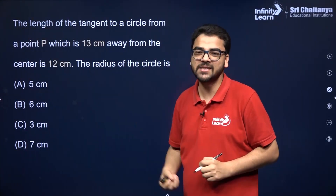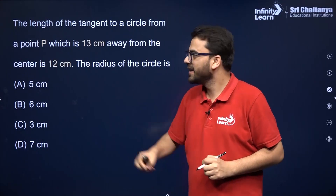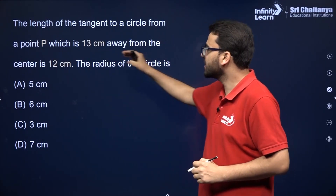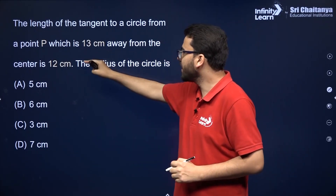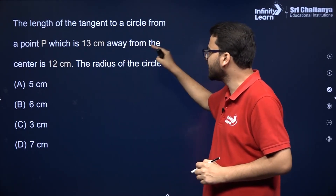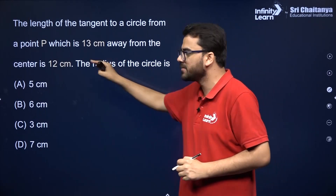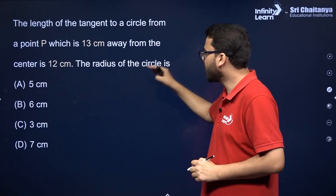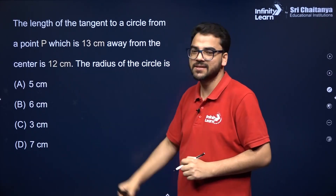Try doing this question. The length of the tangent to a circle from a point P, which is 13 centimeters away from the center, is 12 centimeters. You have to find the radius of the circle.